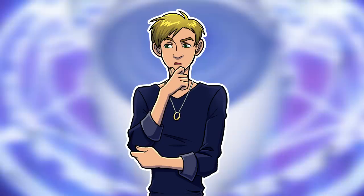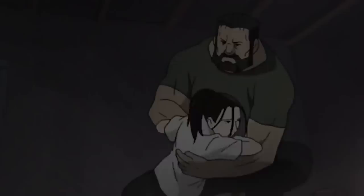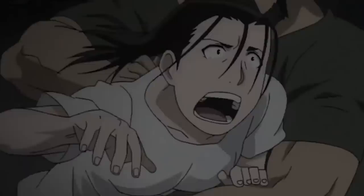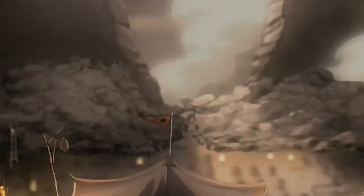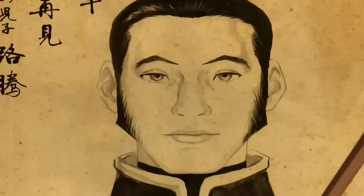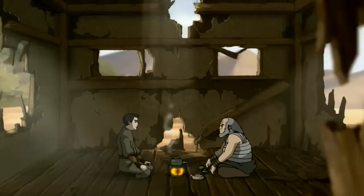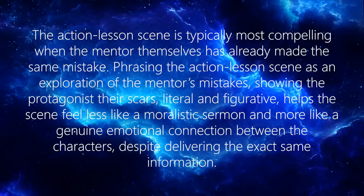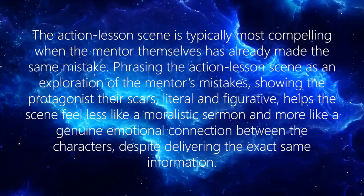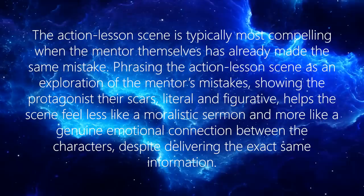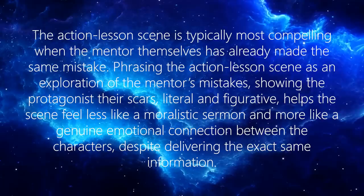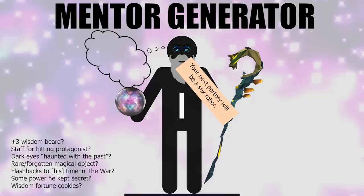Firstly, use the action lesson scene to explore the mentor as a person. In Fullmetal Alchemist, Izumi had actually practiced human transmutation herself long ago, so she was drawn to Ed and Al and understands their struggle. In Avatar, Iroh was once someone who saw power as the most important thing, until it led to the death of his beloved son, Lu Ten. So it breaks his heart to see Zuko falling down the same path. The action lesson scene is typically most compelling when the mentor themselves has already made the same mistake. Framing it as an exploration of the mentor's own scars — literal and figurative — helps the scene feel less like a moralistic sermon and more like a genuine emotional connection of empathy between the characters, while still delivering the exact same information.